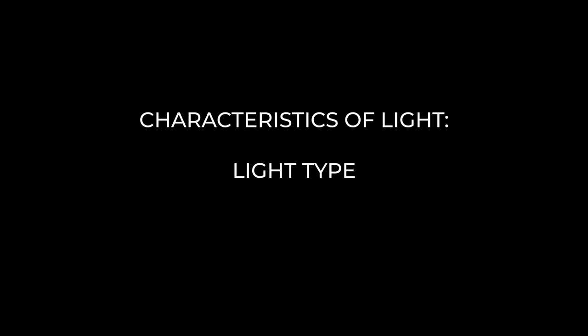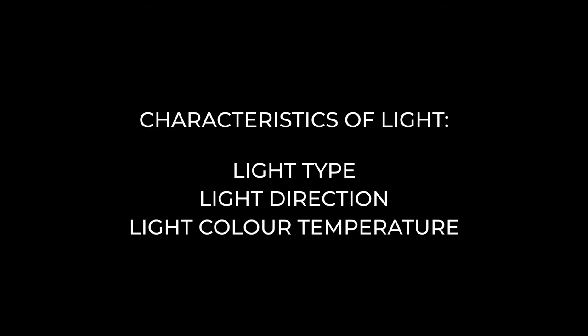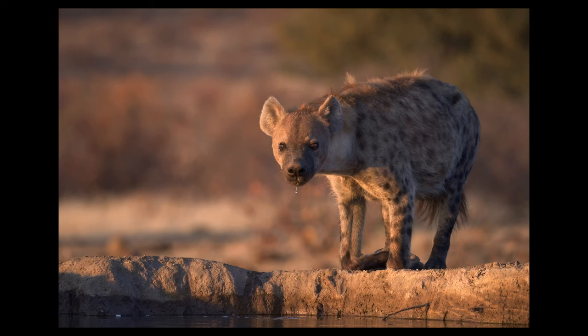Light has three distinct characteristics: the type of light, the direction, and the color temperature. Let's look at these characteristics in depth and find out how we can utilize them to create better photographs.